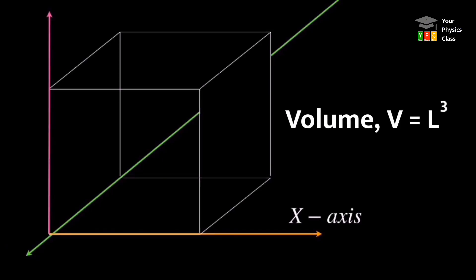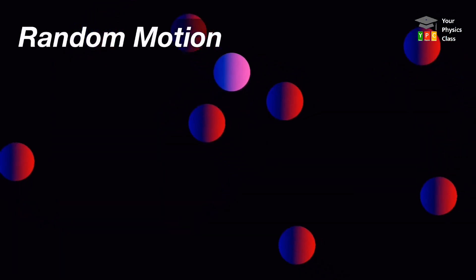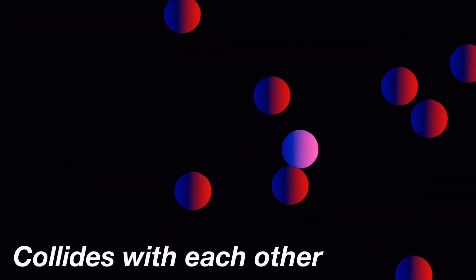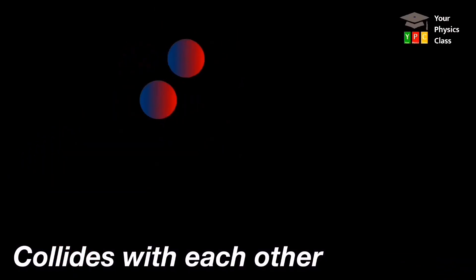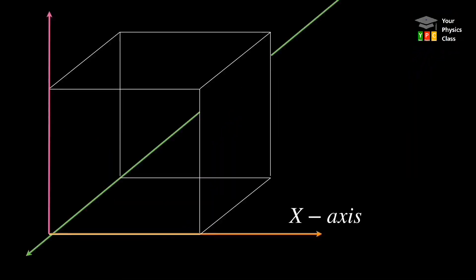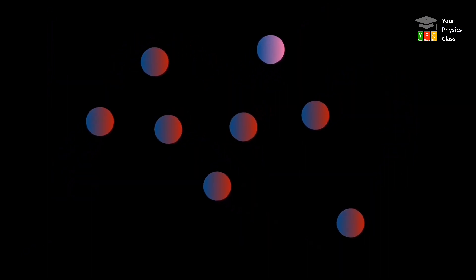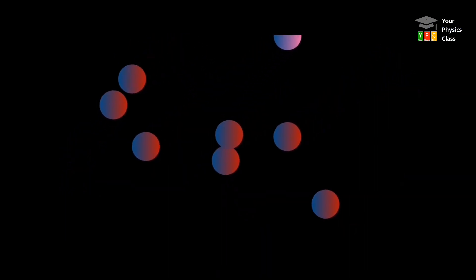Walls of cube are kept at constant temperature. Gas molecules hamesha state of random motion mein hote hain. Woh ek dusre se aur wall se takrate hain. Ya intermolecular force zero manke chaliye kyunki yeh ideal gas ka mamla hai.